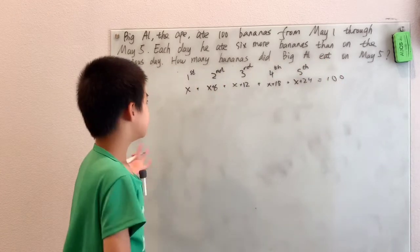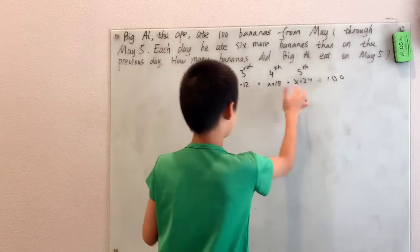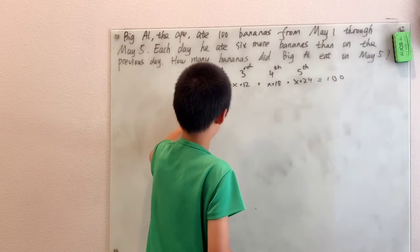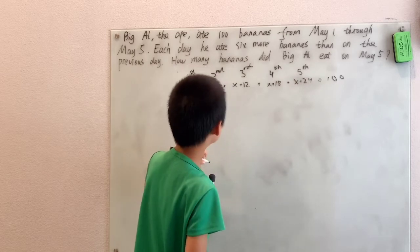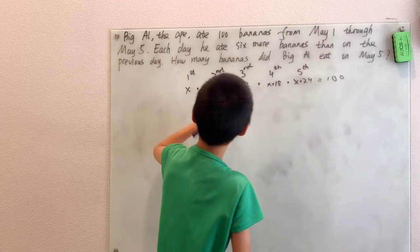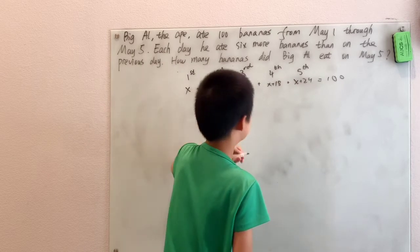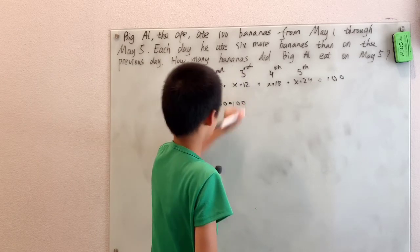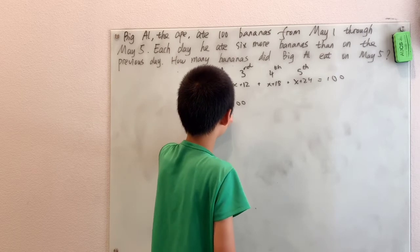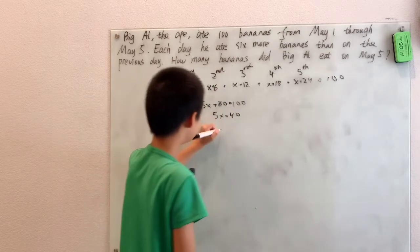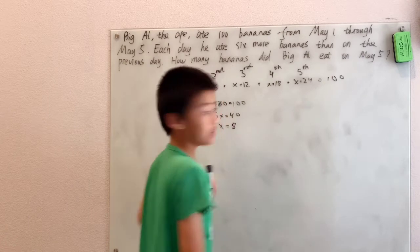Well, that means that we have 1, 2, 3, 4, 5 X's, plus 6 plus 12 plus 18 plus 24, which is 60, and that equals 100. So, 5X equals 40, and X is 8.